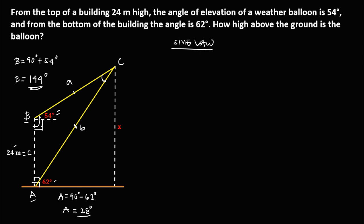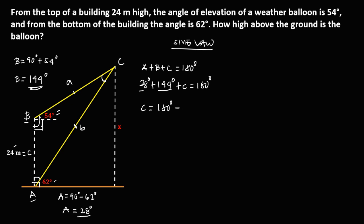To solve for angle C, since the sum of three angles is 180 degrees: angle A plus angle B plus angle C equals 180. So 28 degrees plus 144 degrees plus angle C equals 180. Angle C equals 180 minus 172 degrees, therefore angle C equals 8 degrees.